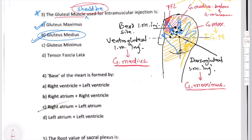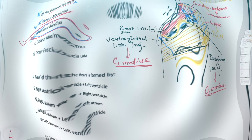Both gluteus maximus and medius are muscles used for intramuscular injection, but the safest and best practice is the ventrogluteal technique I demonstrated. Students who marked gluteus medius (option B) should receive full marks, but those who marked gluteus maximus should also be considered correct since the question framing was not precise.